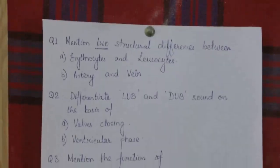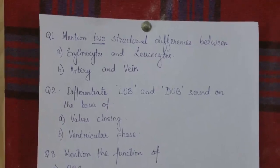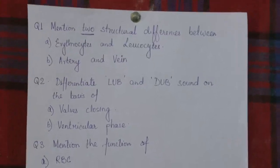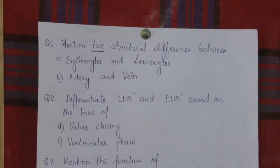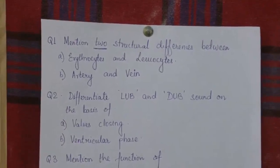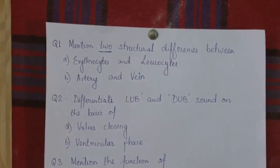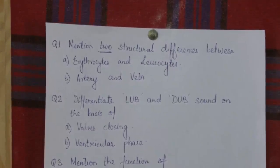Question number one: mention two structural differences between erythrocytes and leukocytes, and between artery and vein. Note that differences should be structural, not functional. Functional differences like taking blood towards or away from the heart, or carrying oxygenated versus deoxygenated blood, are not acceptable. For structural differences, mention the wall, the lumen, and the valve — any two.